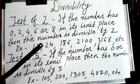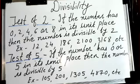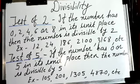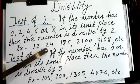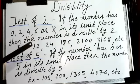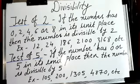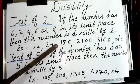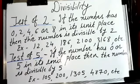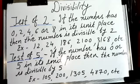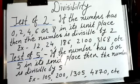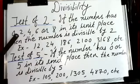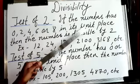We mostly learn tables up to ten. But take twenty-four — is it divisible by two? You might say no, but it is divisible, because if you extend the table of two further, you will find twenty-four there. For small numbers it is easy, but for three or four digit numbers, we normally have to divide and check if the remainder is zero. That is why we learn the divisibility test of two.